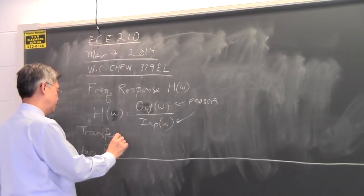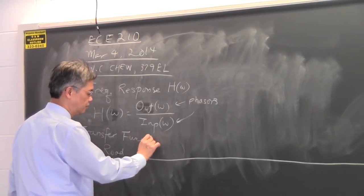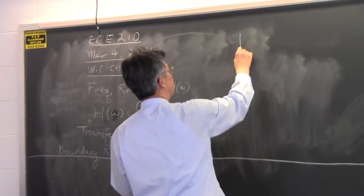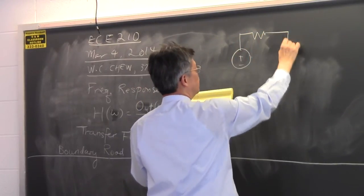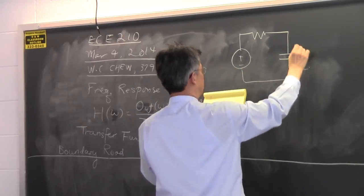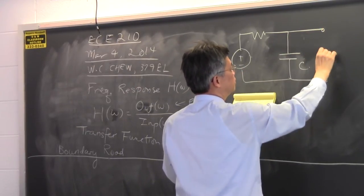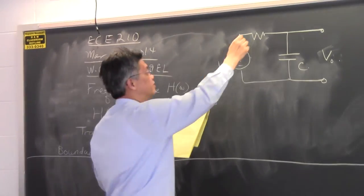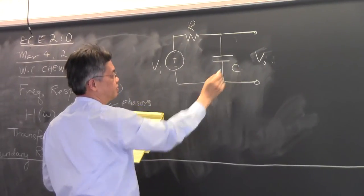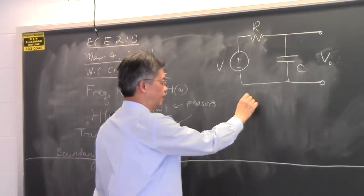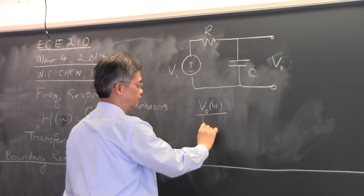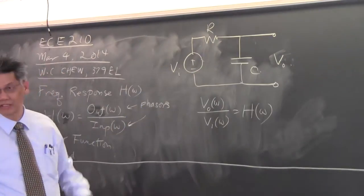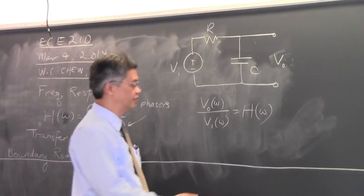In other terms, you might see this called the transfer function. Nothing more complicated than that. We did a very simple example: if you have a capacitor and a resistor in a phasor circuit and you're asked to find V_R over V_in, that would be called the frequency response. You can work out the formula right away using the voltage divider formula.